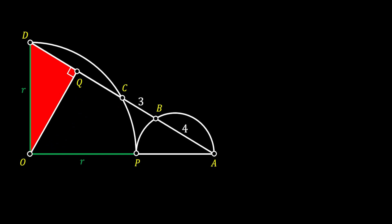Let's pull a line from point C to point P and try to calculate the angle at point C. We notice that the inner angle at point O is equal to 90 degrees since we have a quarter circle. That means the outer angle at point O must be 270 degrees.